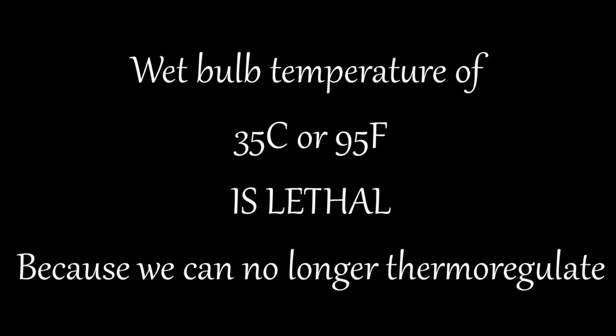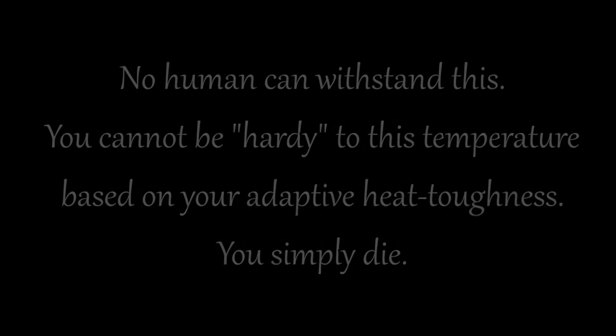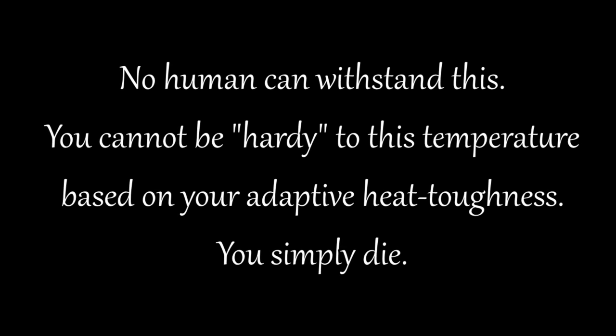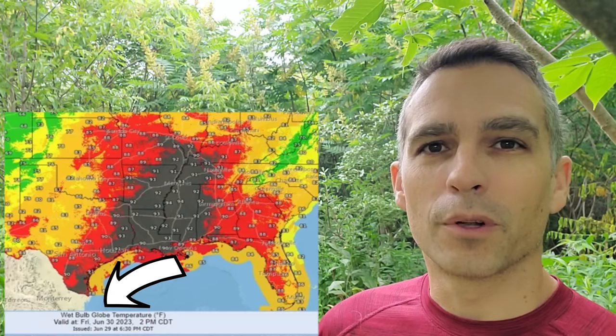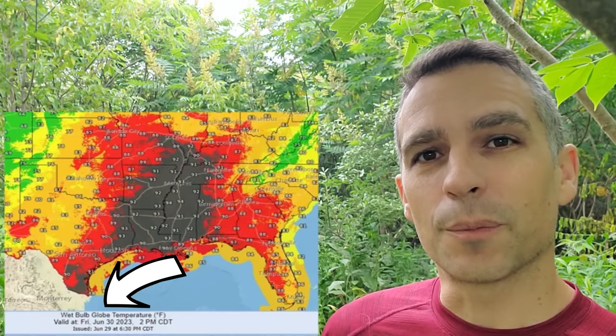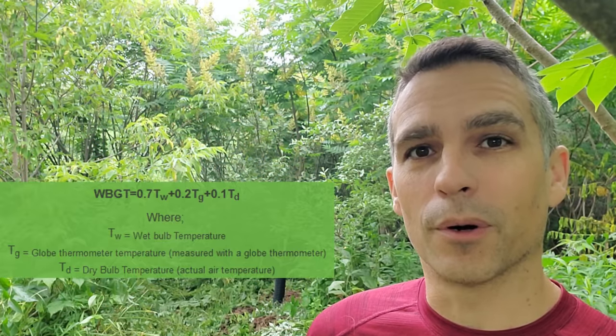A wet bulb temperature of 95°F or 35°C being lethal is something that a lot of people don't know. So now that you understand what wet bulb is, I can explain what wet bulb globe temperature is. Wet bulb globe temperature takes into account two other things — it's a weighted mix, and 70% of the wet bulb globe temperature is just the wet bulb temperature.